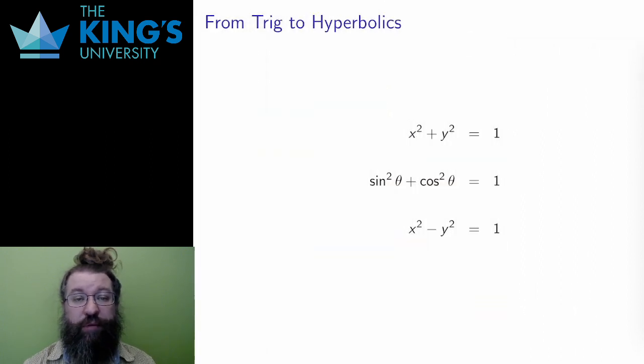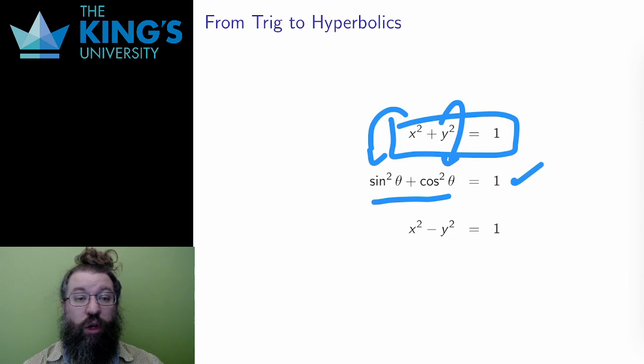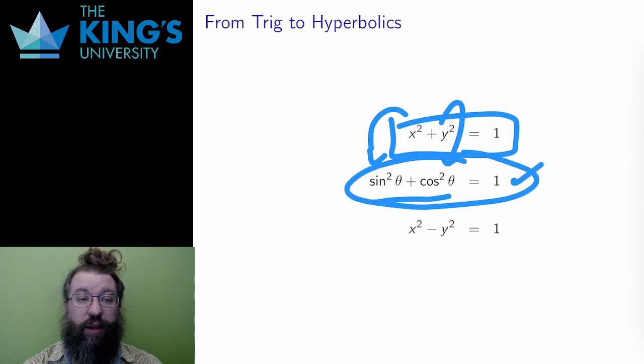Everything about the trig functions is based on this circle definition. All the properties, all the identities, everything. In particular, the equation of the unit circle is x² + y² = 1. While if x is sine θ and y is cosine θ, then sin²θ + cos²θ = 1, which is the most basic of the trig identities. This identity recovers the fact that this is all based on the unit circle.